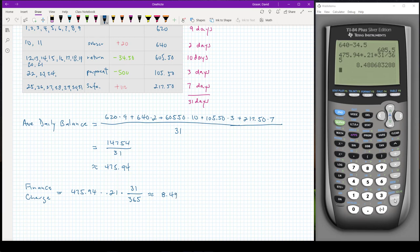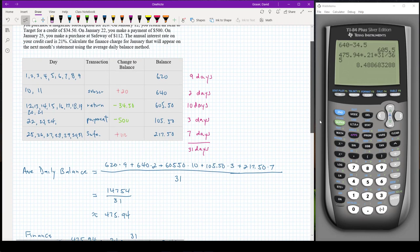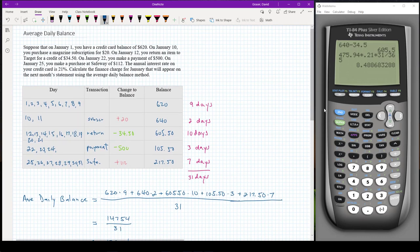So the key thing here I find is when I do these average daily balance calculations, to make a table, list out the days. Don't say one through nine, because if you say one through nine, you have a tendency to say that's eight days. I like to list out the actual days so then I could count them up to get my nine days. Off to the side, it's balance times the days, balance times the days. You add those all up, that's the top part of the average daily balance, and then divide by the total number of days.